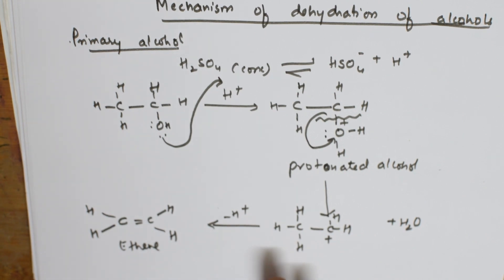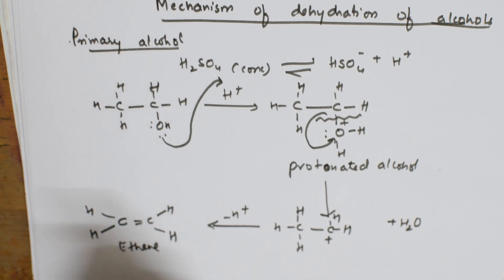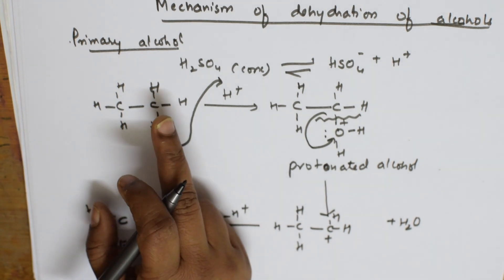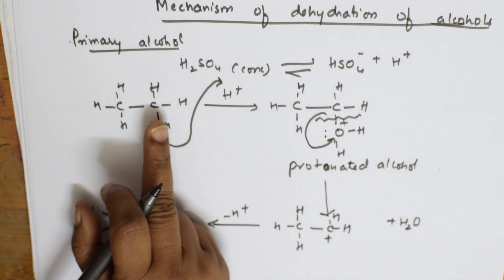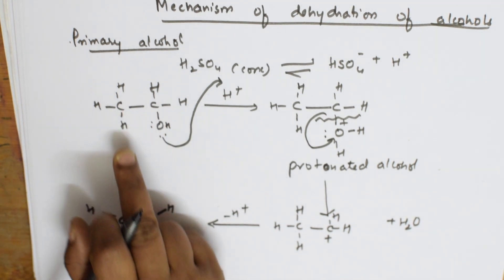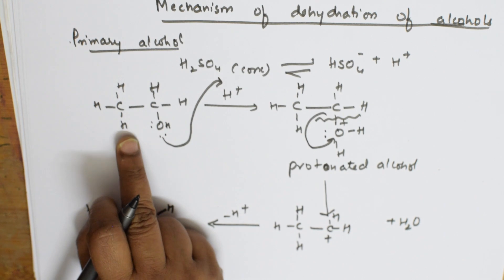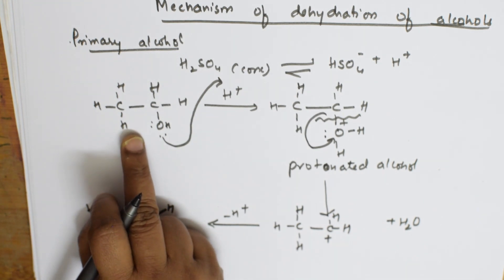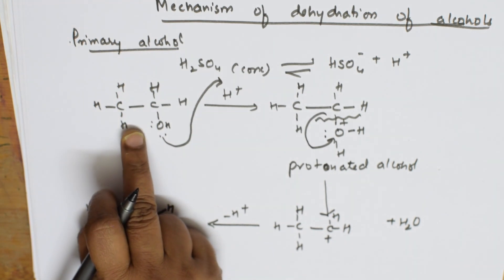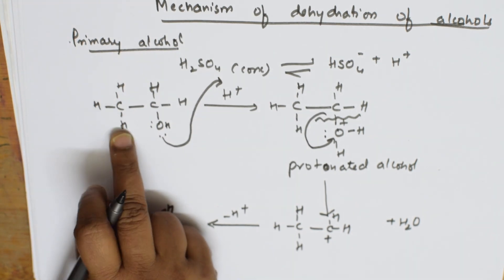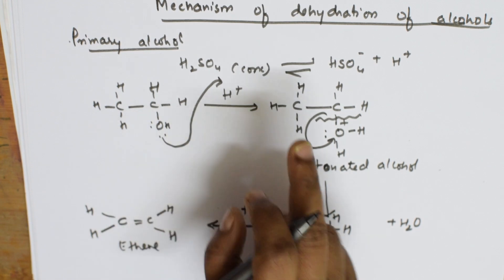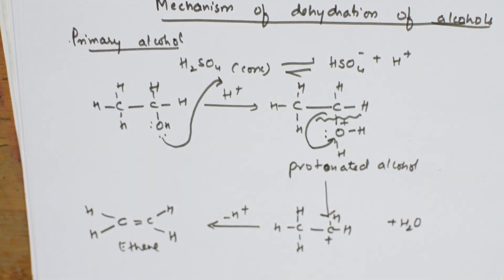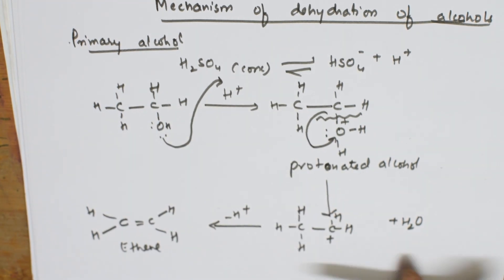An important point here: the hydrogen is always eliminated from the beta position. This is alpha and this is beta — hydrogen from the beta position is eliminated, which is why this is called beta elimination.